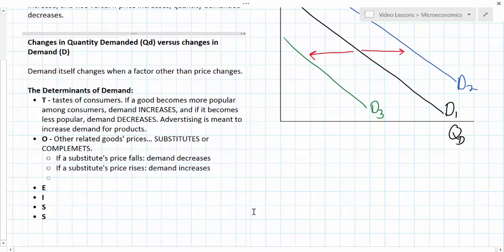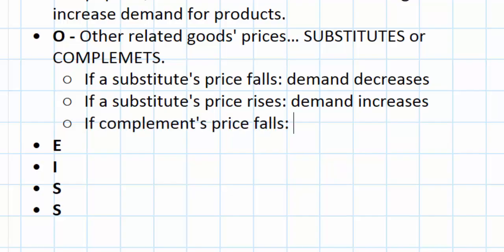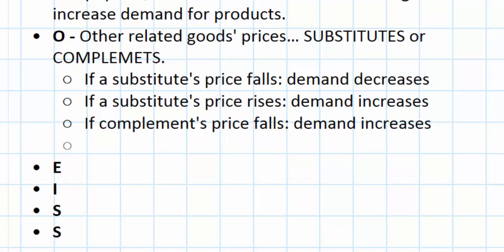Complementary goods are goods that are often consumed together with the good in question. Classic examples are hot dogs and hot dog buns, ice cream and ice cream cones, charcoal and charcoal grills, basketballs and basketball shoes, skis and ski poles. So what happens if a complement's price falls? If hot dogs get cheaper, what will happen to demand for hot dog buns? Demand increases. If the price of one good gets cheaper, you will consume more of the cheaper good, but also more of that good's complement.